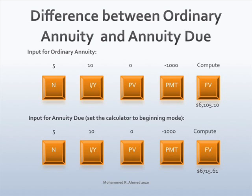The future value of $1,000 deposit for five years is $6,105.10. Let's enter the data in the calculator in the following order for annuity due. Before you enter the data, change the mode of the calculator to the beginning mode.